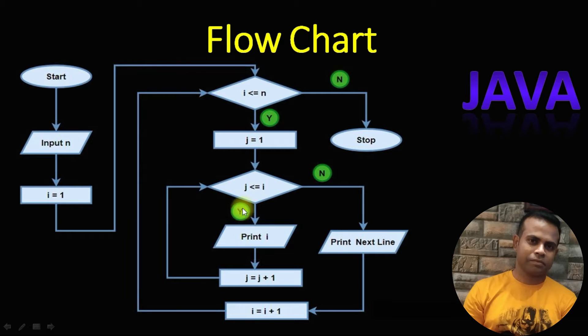This is the flowchart for this program. The only difference between the previous day and today is that previously we printed j, and today we are trying to print i.